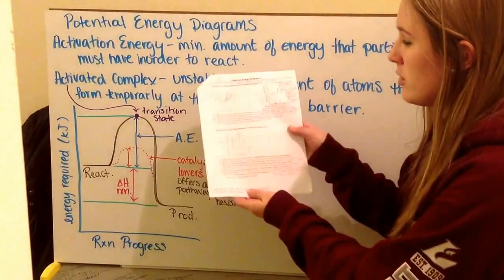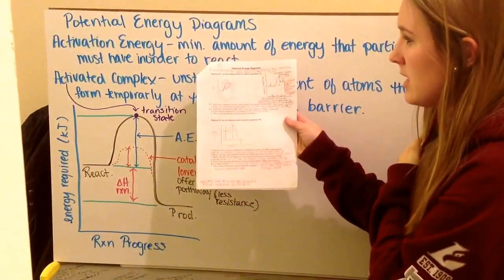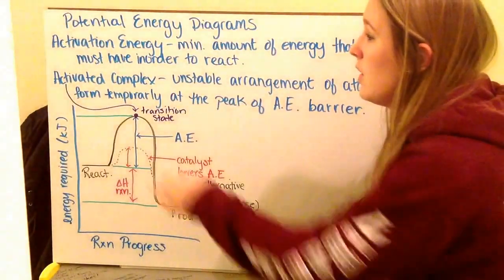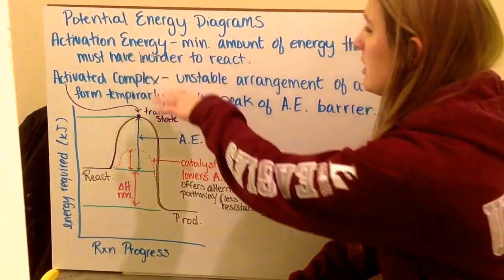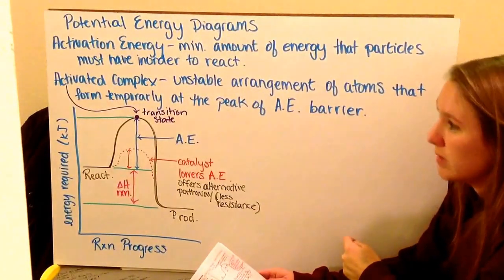So this goes along with your notes in the packet that are on potential energy diagrams that looks like this. A couple words we need to know to begin with. We have the activation energy. This is the minimum amount of energy that particles must have in order to react.